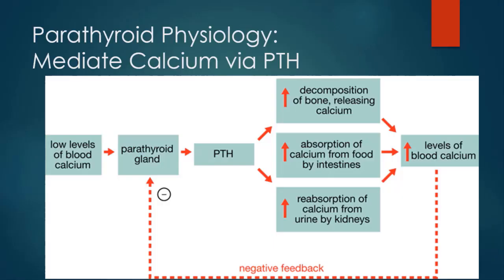We will show this single chart of parathyroid physiology. It mediates serum calcium via parathormone. The parathyroid gland acts when it sees low levels of blood calcium to increase the level of parathormone and thereby perform physiologic functions to elevate serum calcium. It's a negative feedback loop — the classic human feedback system.